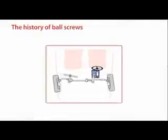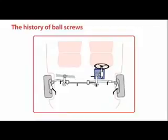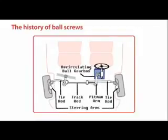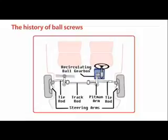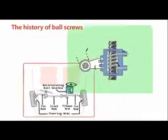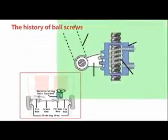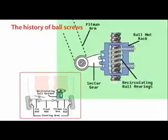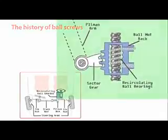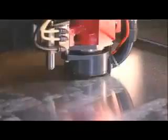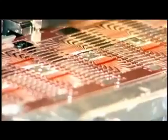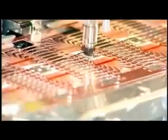The first attempt to place ball bearings between a nut and screw, replacing sliding friction with rolling friction, was made in 1898. Ball screws were applied to automotive steering systems in the 1940s, and subsequently were used in many kinds of industries, including the machine tool and semiconductor industries.